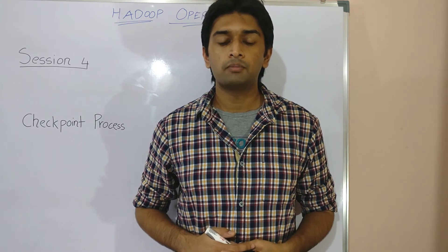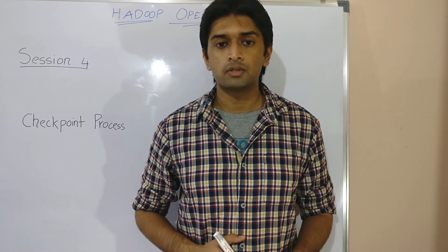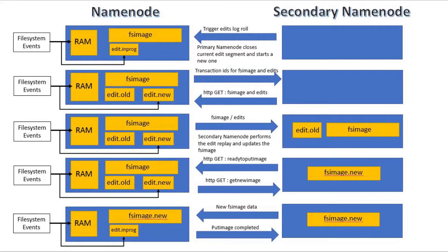With the secondary name node in the picture, let's summarize the new checkpoint procedure. The secondary name node will keep track of the elapsed time and the number of transactions from the last edits roll. It will trigger a checkpoint automatically once any one of the preconditions are met. Once the primary name node receives the message for an edits roll, it will close its current edit segment and start a new one. The primary name node can keep writing to the new edit segment while the checkpoint is in progress.